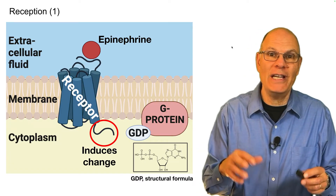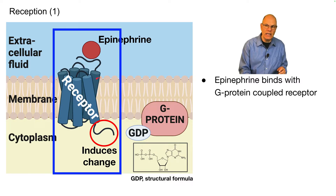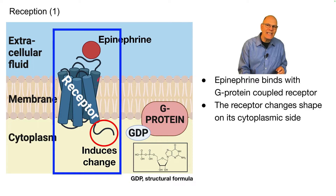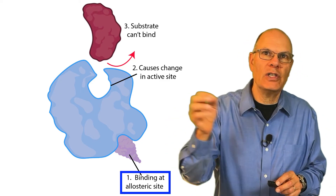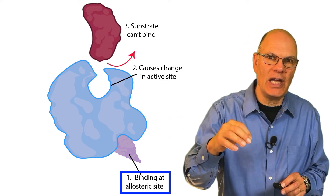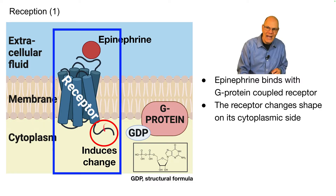What happens when epinephrine enters the system? The first thing that happens is that epinephrine binds with a G-protein-coupled receptor. This is a complicated protein — we've talked about allosteric shifts in relationship to enzymes, where when something binds at an allosteric site it can change the active site. The same mechanism is at work here: epinephrine binds over here and that change ripples through this protein, inducing a change on the cytoplasmic side.